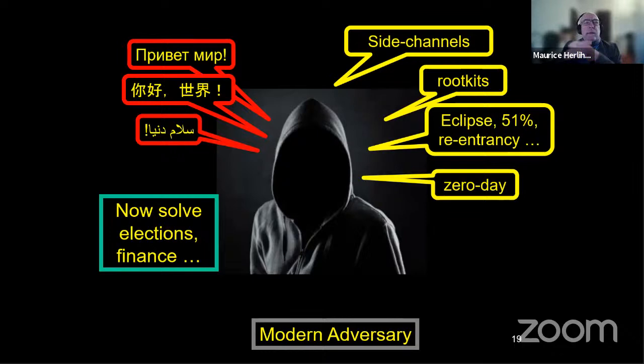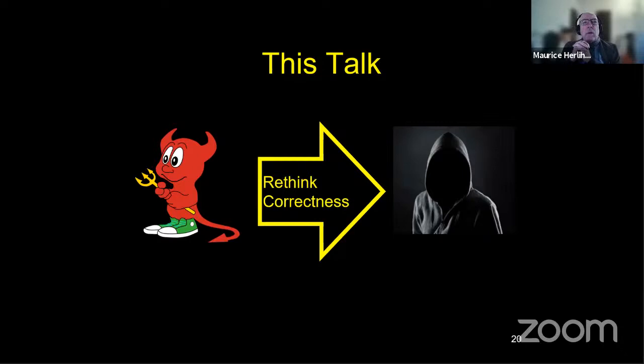And what we want to do is we want to say, well, what does it take to do commerce in this kind of open-ended, against this kind of open-ended adversary where we know very little about the adversary, but the adversary has lots of resources at its disposal. So what I want to argue in this talk is that our conventional notions of correctness for atomic transactions and distributed systems aren't adequate for this much more challenging and somewhat ill-defined world.